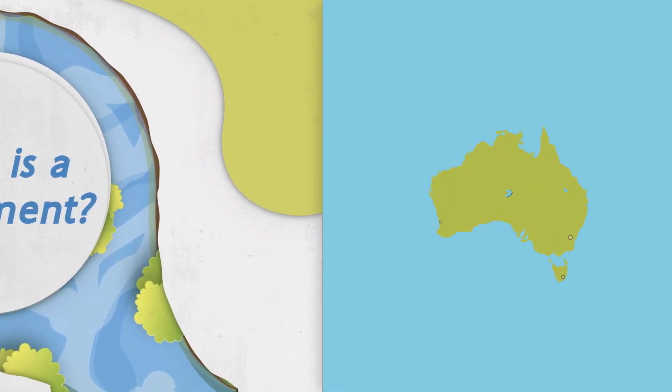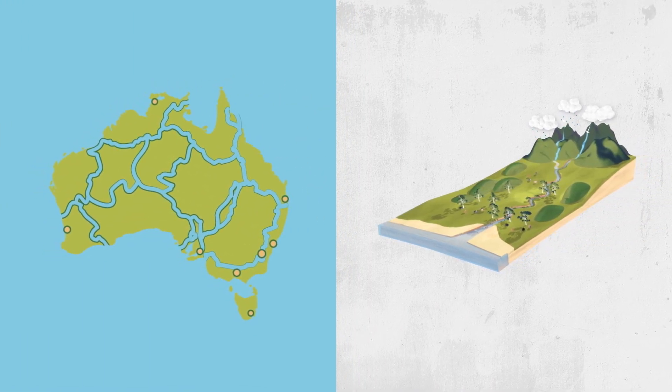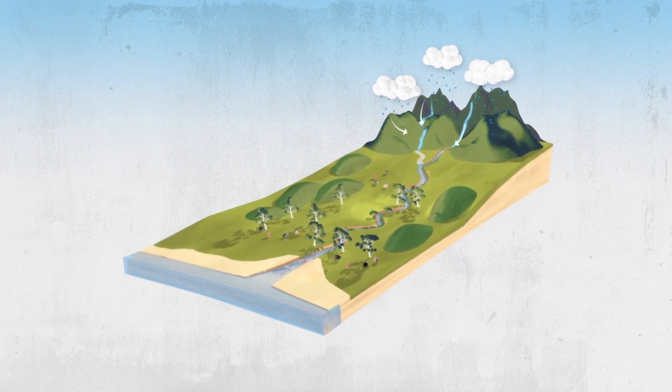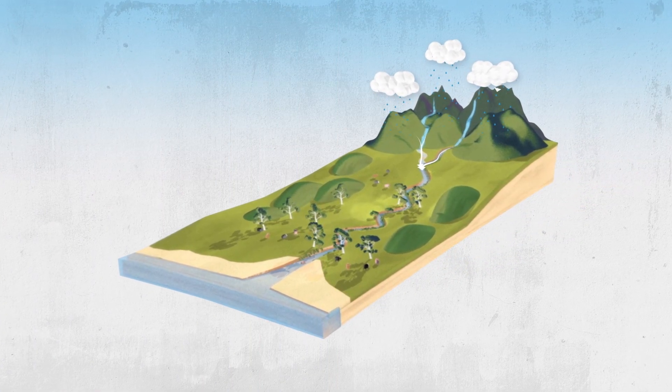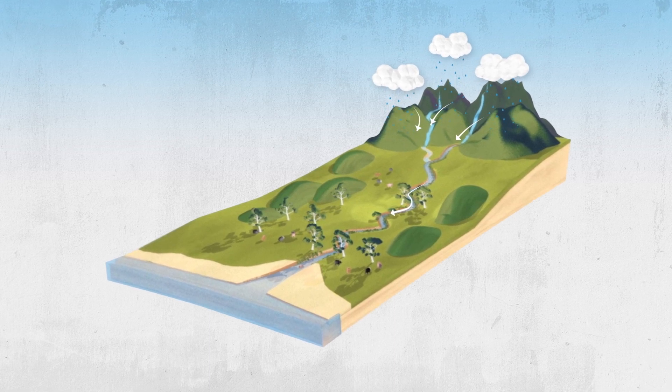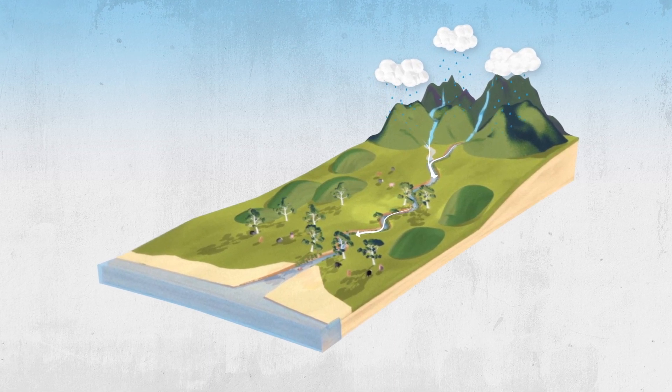A river catchment is the area where water collects when it rains. As the water flows over the landscape, it finds its way into streams and down into the soil, eventually feeding the rivers that flow to the sea.